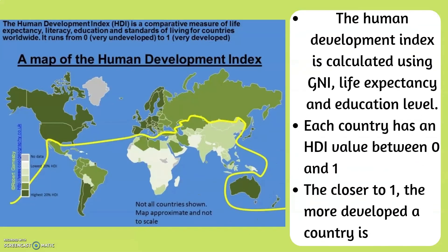The Human Development Index is calculated using GNI, life expectancy and education level. Each country has an HDI value between 0 and 1. The closer to 1, the more developed a country is.